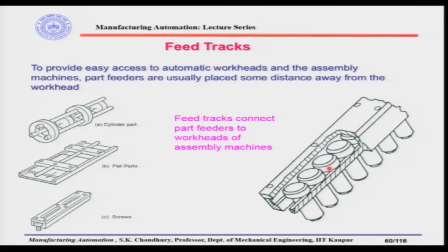Part tracks connect part feeders to the work heads of the assembly machine. Open spaces are normally kept in feed tracks so that if clogging happens, quick access is possible. Windows are provided, and if those don't help, a cover can be quickly removed to access and clear the clog.